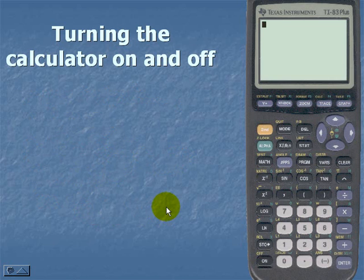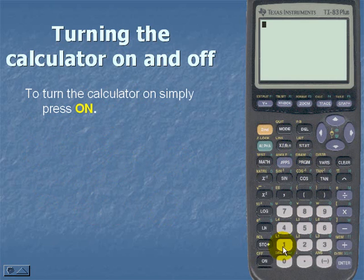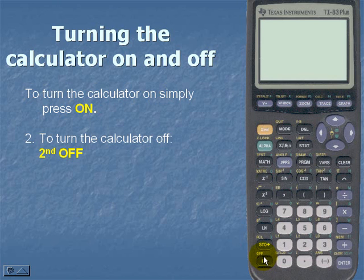Turning the calculator on and off. To turn the calculator on, simply press ON. To turn the calculator off, notice that OFF is yellow and it's a second function, so we'll hit second and ON, which is actually the OFF.